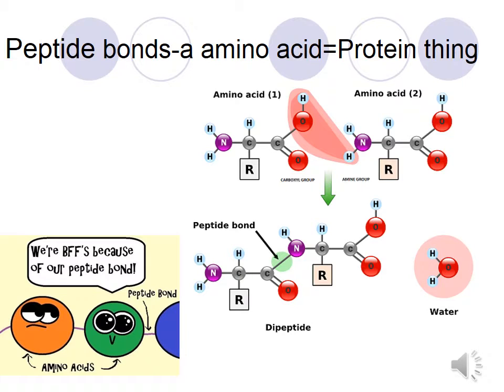Amino acids come together to make proteins. In between the amino acids, there's a special bond called a peptide bond. Peptide bonds are involved in the making of proteins.